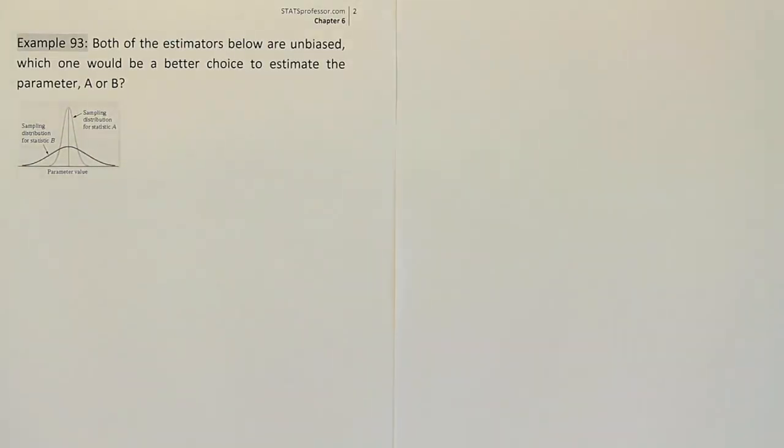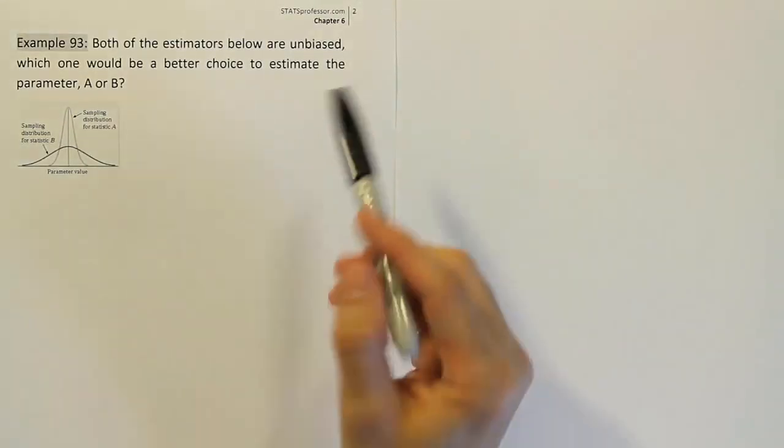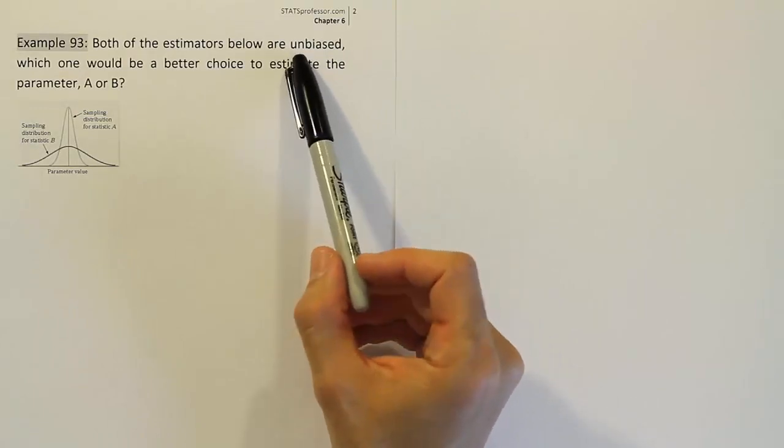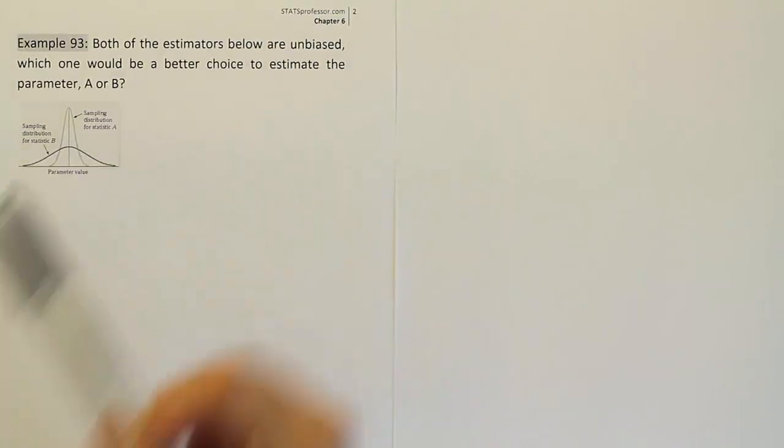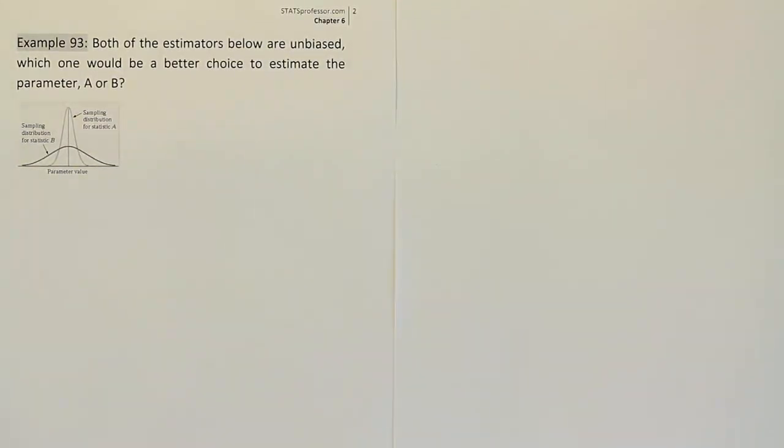Alright, so this is interesting. It tells us that they're both unbiased. Remember, unbiased is a good thing. We want that in our estimators. But they both have that trait, so we can't decide among them based on that idea because they're equal in that regard.